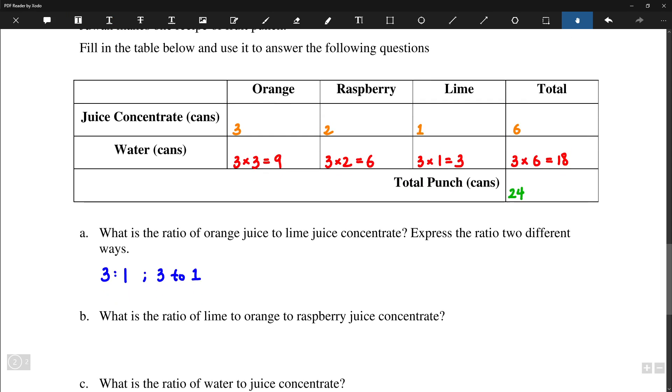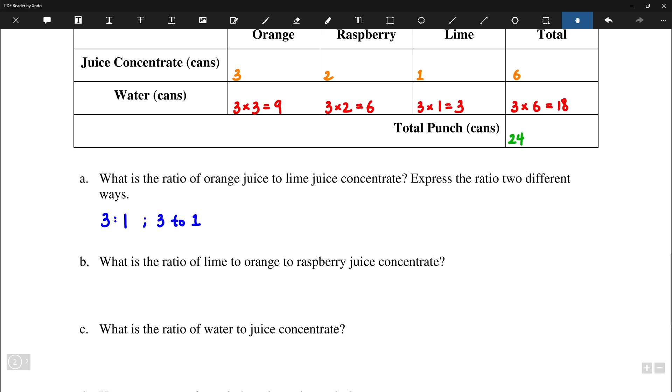Lime juice to orange juice to raspberry juice. So instead of 3, 2, 1, like we have listed up here, we have to write it in the order that's presented to us. So that would be 1 to 3 to 2.